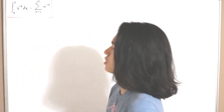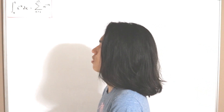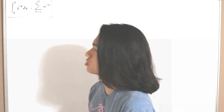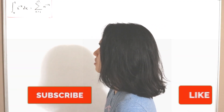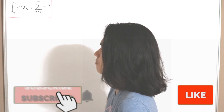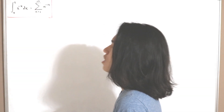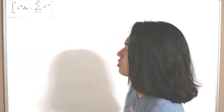Welcome back to another video. In today's video we have the following identities that we want to verify: the integral from 0 to 1 of x to the power negative x is equal to the infinite sum of n to the power negative n. These pair of identities have a special name.